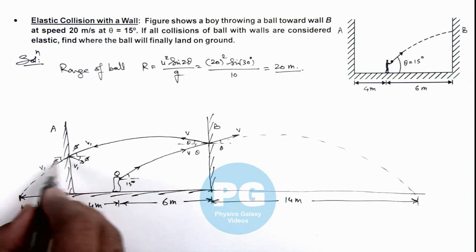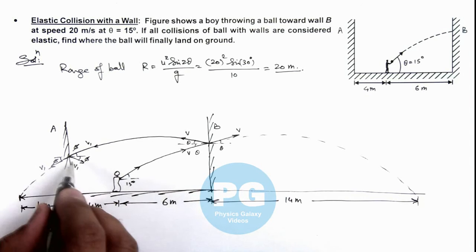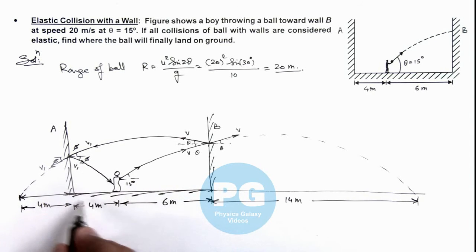So again the mirror image of this parabolic trajectory will be there in reality, and finally the ball will land exactly at a distance of 4 meters.